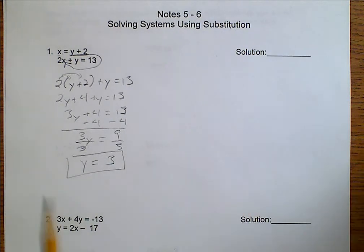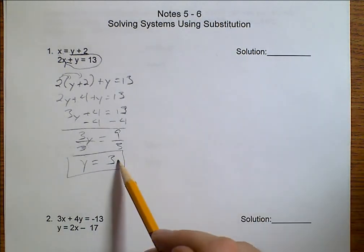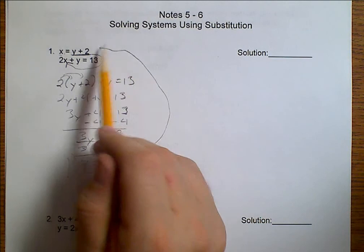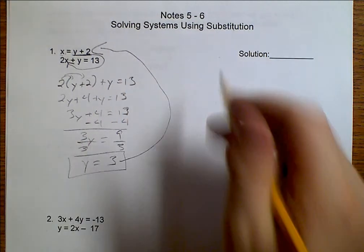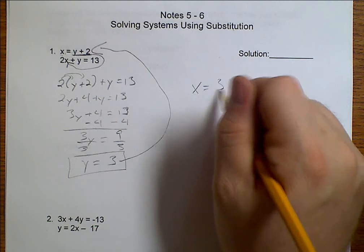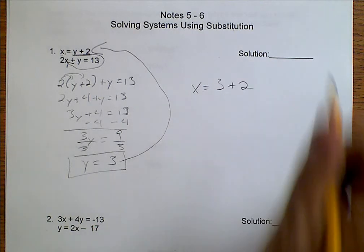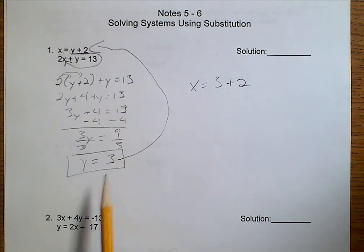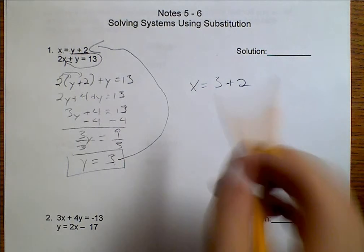Well, I know what Y equals, so I need to figure out what X equals. I'm going to come back over here. I plug this into my other equation. X equals 3, so X equals 3 plus 2. Just replace the Y with 3. So, X equals 5.